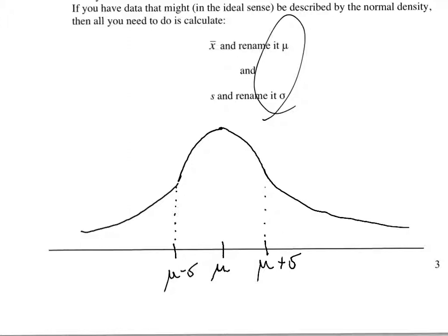In addition to the density curve turning at these points of inflection, within one standard deviation there are several bars. Imagine there's a relative frequency histogram under this density curve. Under the whole thing are 100 percent of the observations.